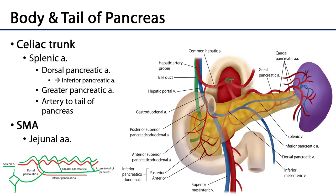Let's look at this schematic. Here is the splenic artery — a very nice tortuous artery. There is the dorsal pancreatic artery continuing on as the inferior pancreatic artery, which runs the length of the pancreas. There's the greater pancreatic artery anastomosing, and then the arteries to the tail of the pancreas also anastomosing with that inferior pancreatic artery. We can see an anastomosis between those pancreaticoduodenal arteries and the inferior or dorsal pancreatic artery as well. And finally, let's not forget those jejunal arteries which can supply both the pancreas and the duodenum with blood.